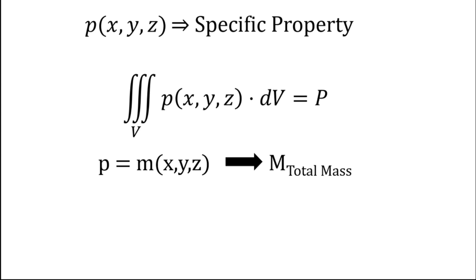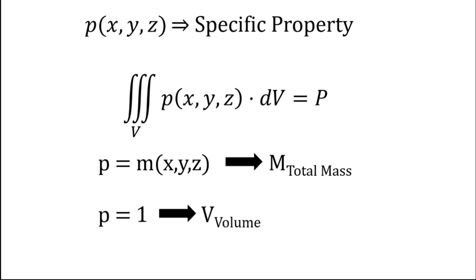For example, let's say p is a mass density function m(x, y, z). If we integrate m with respect to dV, what we get is the total mass of the volume. Similarly, if we put p equal to 1 and simply integrate dV, we get the total volume.